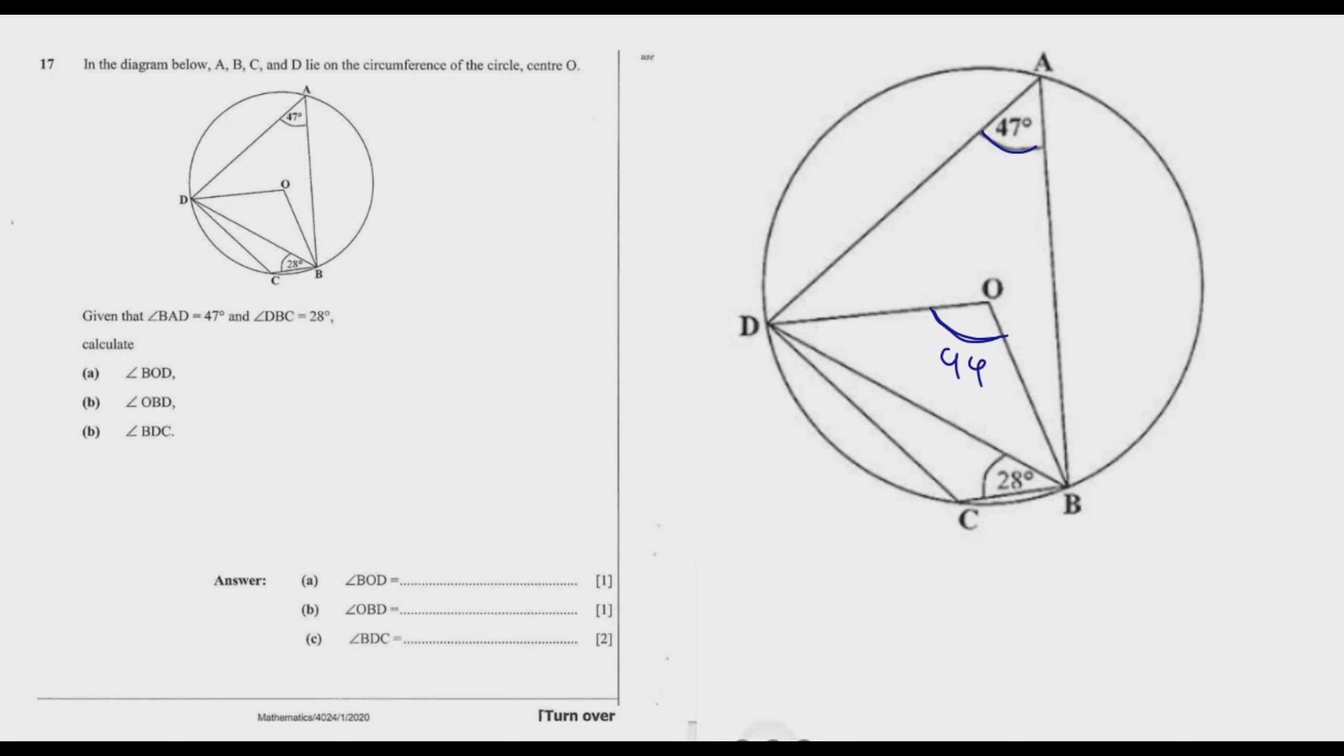We can also use the same principle to find this angle. Using the fact that the complete circle adds up to 360 degrees, it's 360 minus 94, which gives us 266 degrees. So the angle on this side should be 266 degrees.